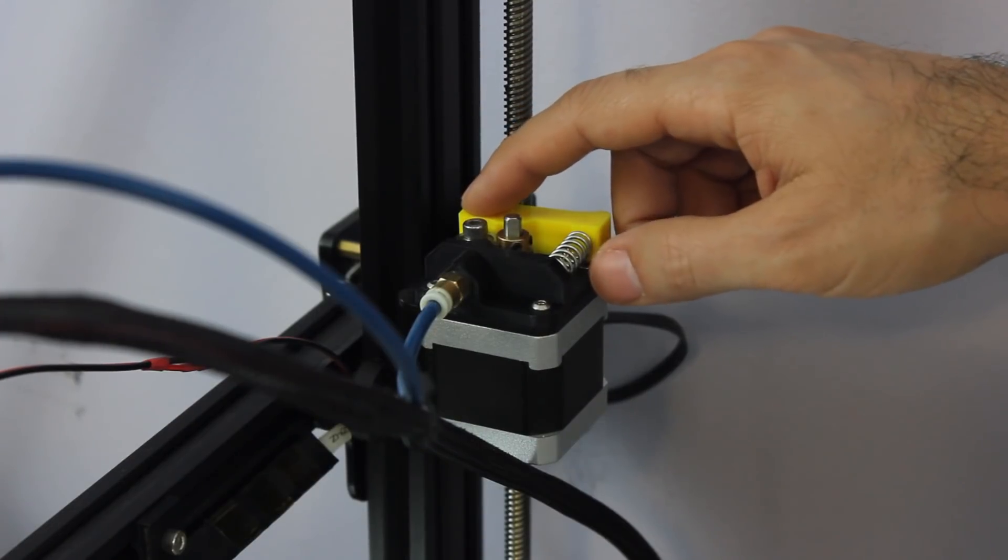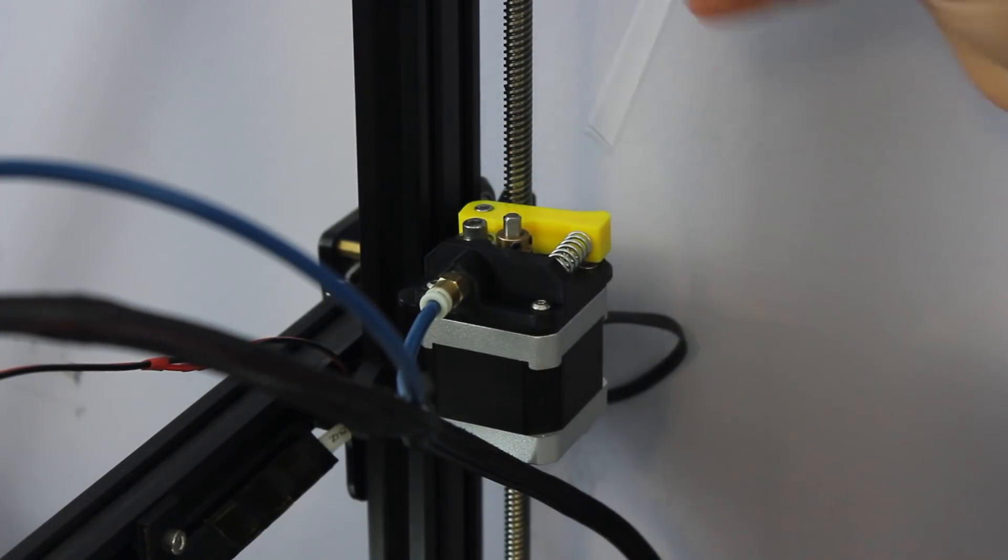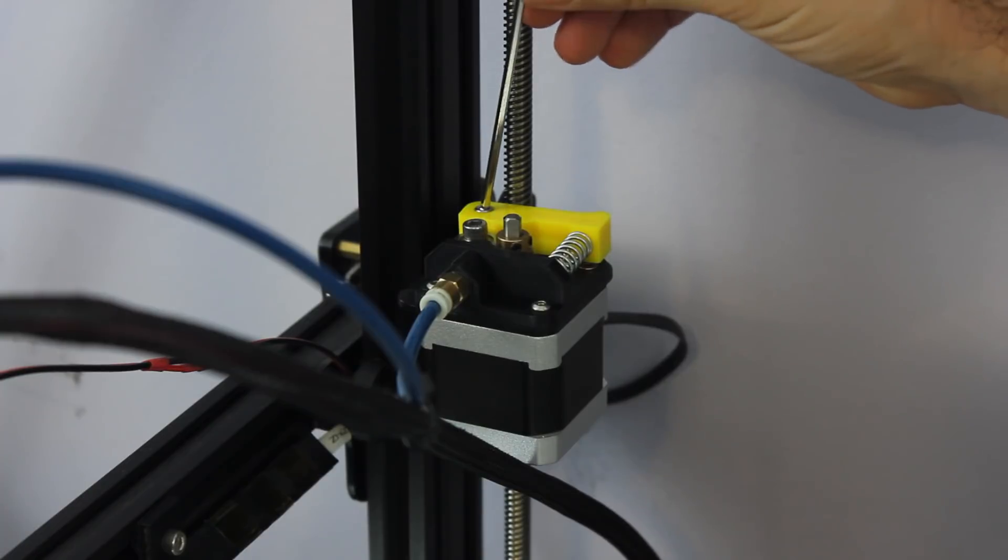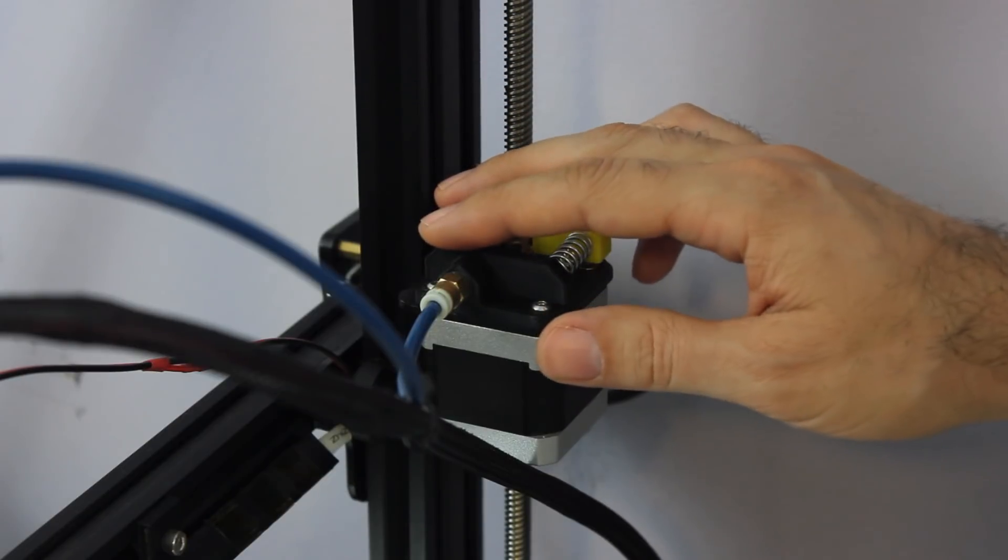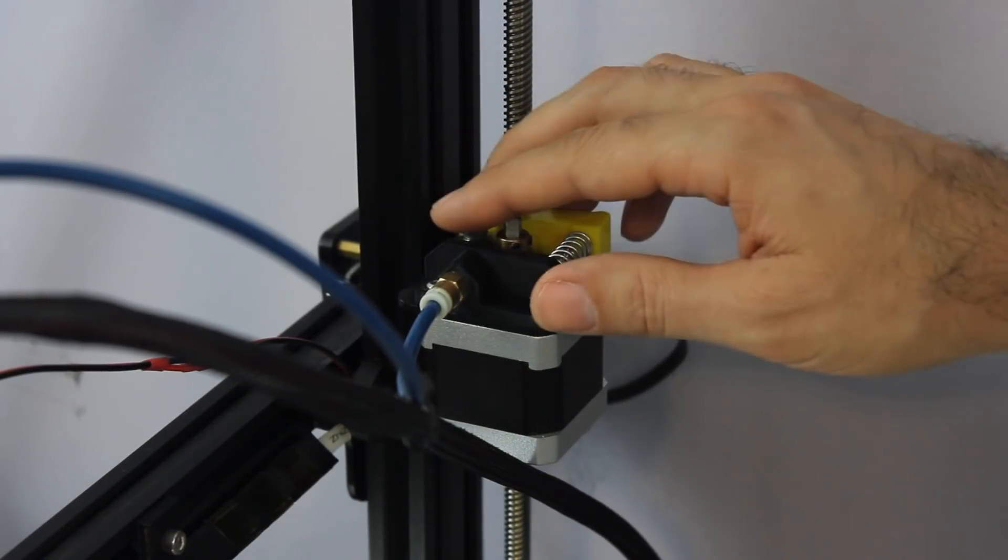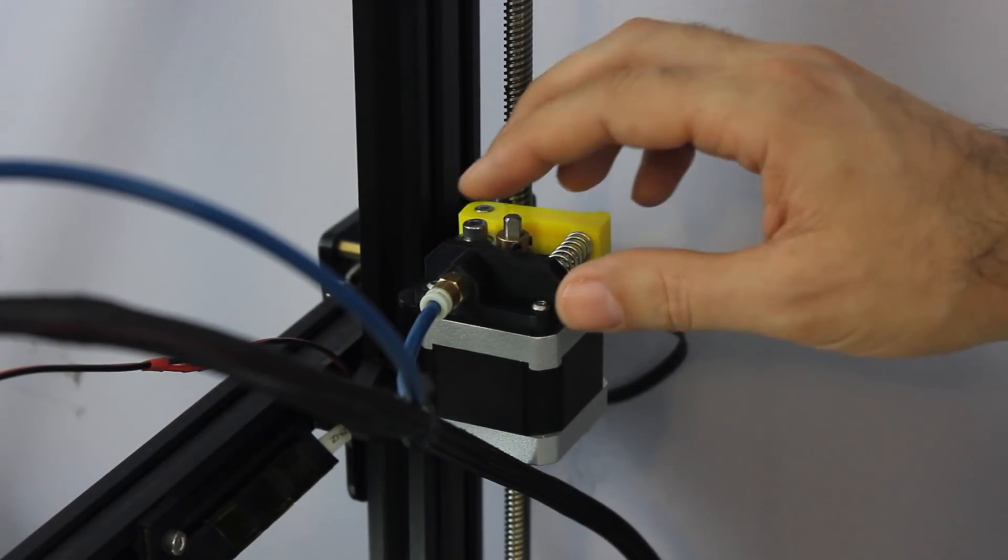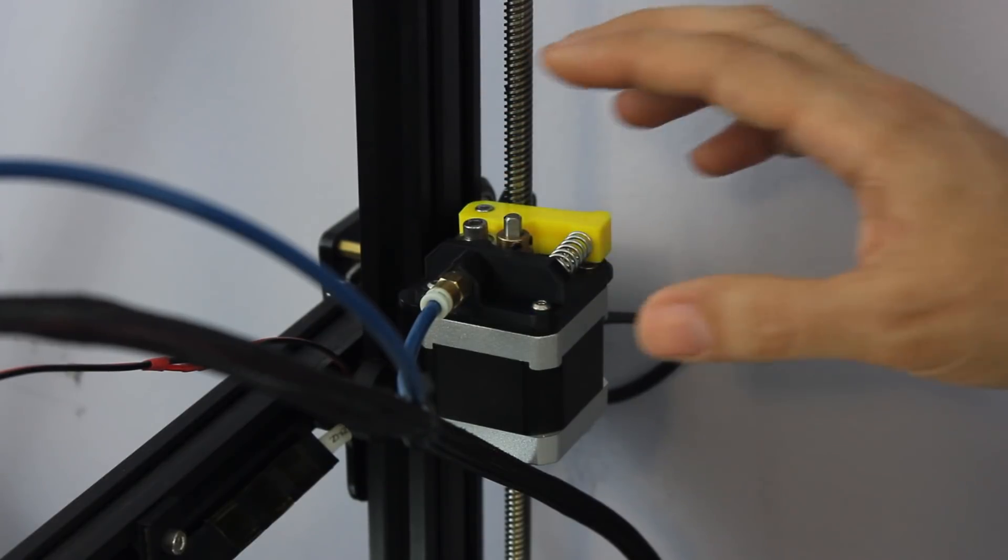And so what I did is I started backing the screw off just a little bit, and it got a little better. And so I'd back it off more, and it got a little bit better to the point where it was almost gone, but it wasn't completely gone. I backed it off until it started under-extruding again.